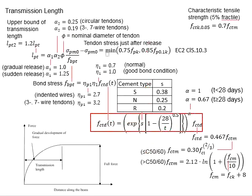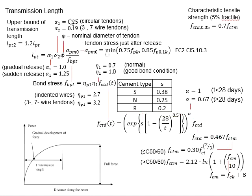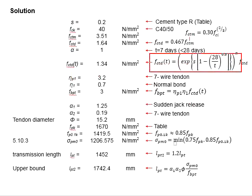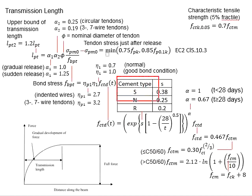First, you need to determine the FCTD on the day that the pre-stressing force is being released. FCTD means the design tensile strength of the concrete at the day the pre-stressing force is released. The equation is given here. You require a value for S, which can be referred from this table. The question says that cement type R is being used, therefore S is equal to 0.2.